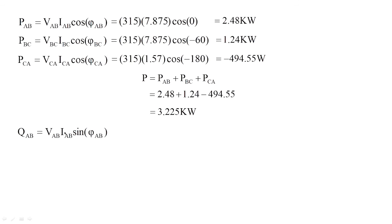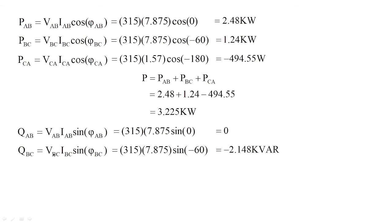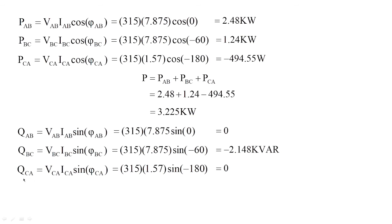The reactive power is calculated similarly. QAB equals VAB times IAB times sin(θ) for Z1 — since sin(0) equals 0, QAB equals 0. QBC equals VBC times IBC times sin(−60°), giving minus 2.148 kVAR. For QCA, the load angle under Z3 is minus 180 degrees, so sin(−180°) equals 0 and QCA equals 0. The overall reactive power is therefore minus 2.148 kVAR. This is how we calculate the active and reactive power and the line currents for the delta network.